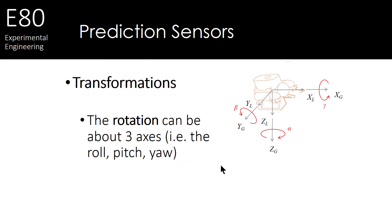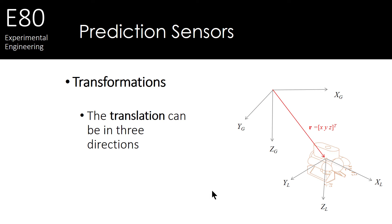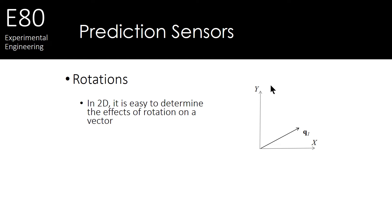So the transformations, there are two types. We can have rotations. So we can have our robot's frame rotate with respect to the global frame in all three directions, roll, pitch, and yaw. But we can also have a translation where the robot's position, hence the robot's local frame, translates with respect to the global coordinate frame.